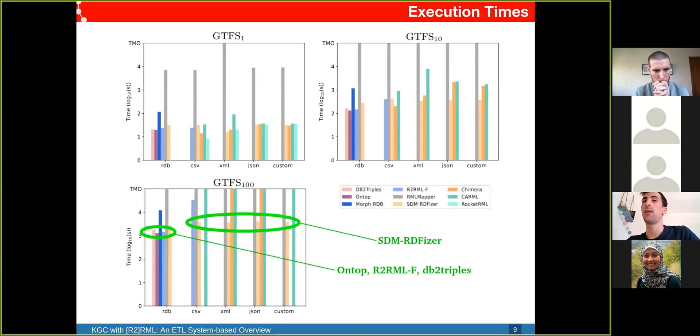Here we have the results regarding execution times. The first thing we should notice is that we have no results for GTFS for scaling factor 1000, because no engine is able to materialize the entire knowledge graph in the machine that we used and the timeout we considered. For scaling factor 10, RML Mapper performs quite slow and gave timeout errors. For the more interesting scaling factor 100, for relational databases OnTop, R2RML-F, and DB2Triples have similar performances and are the best ones. For the rest of the data formats, SDM-RDFizer is with difference the engine that obtains the best results. We have to consider that this is in logarithmic scale.